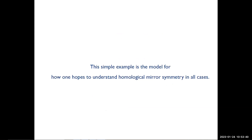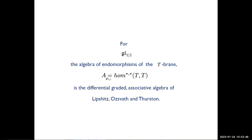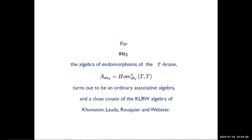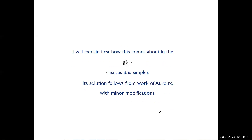So you understand homological mirror symmetry in a manifest sense, and this simple example is a model for how you hope to understand it in all cases. When the algebra is GL(1|1), the morphism algebra of the T-brane is the differential graded associative algebra of Lipshitz, Ozsváth, and Thurston. If the Lie algebra is SU(2), the morphism algebra of the T-brane turns out to be an ordinary associative algebra, which is a close cousin of the KLRW algebra of Khovanov, Lauda, Rouquier, and Webster.